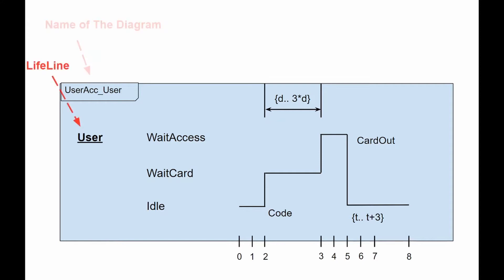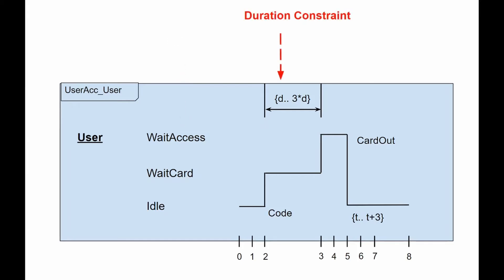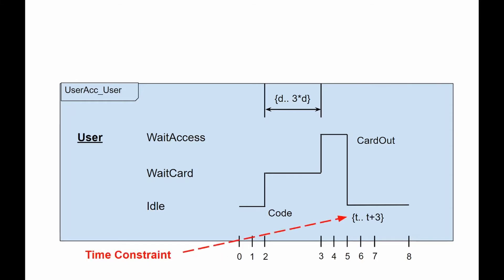Transition from one state to another is a change in the level of the lifeline. During the period of time when the object is in a given state, the timeline runs parallel to that state. A change in state is displayed as a vertical change from one level to another. The reason for the change, as in the case of a state or sequence diagram, is the receipt of a message or request of an event that causes a change, the so-called stimulus.